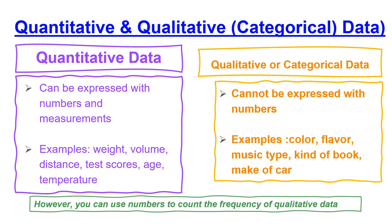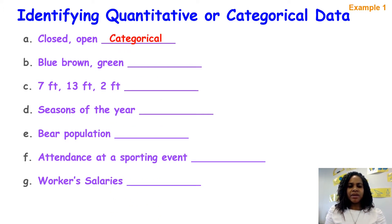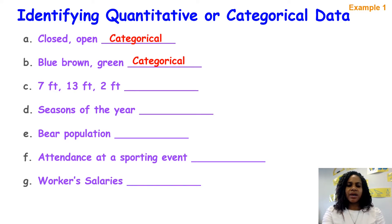However, you can use numbers to count the frequency of qualitative or categorical data. For this example, we're going to look at each item and identify whether it is quantitative or categorical. For item A, we have 'closed or open' — that would be categorical because it cannot be expressed with numbers. Colors like blue, brown, and green are also categorical.